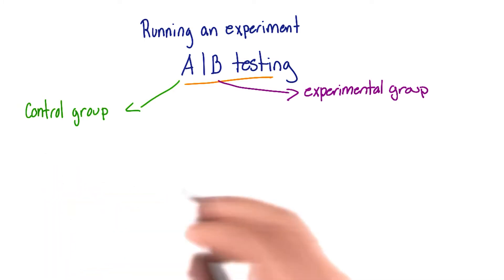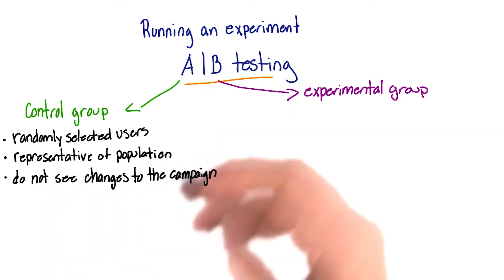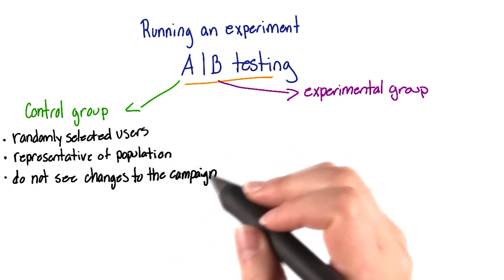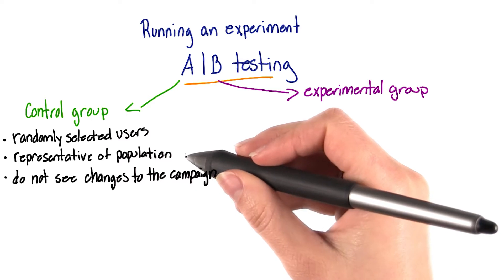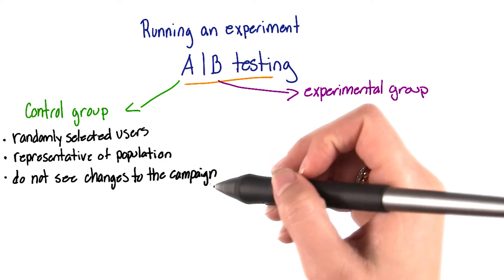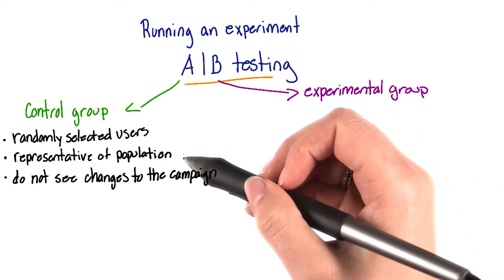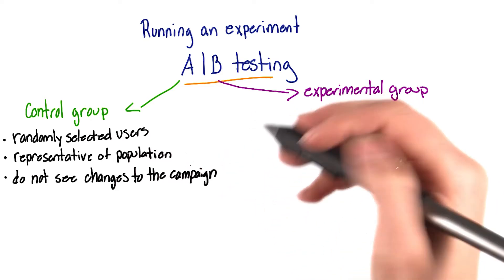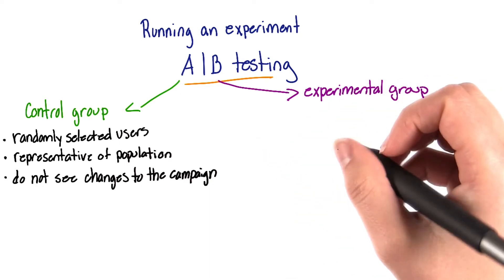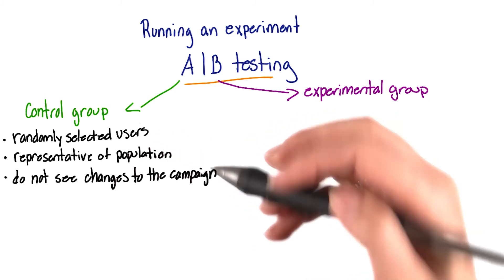You can use a control group and an experimental group. Having a control group can show you how effective your campaign is. The control group consists of randomly selected users who are representative of the population you're targeting and who do not receive the change to whatever campaign you're running. Being representative of the population means that if 50% of your app users are male and 50% are female, you need to have the same demographic in your randomly selected control group.